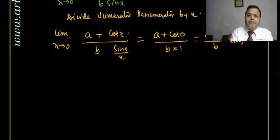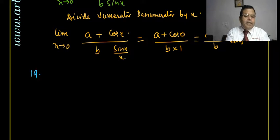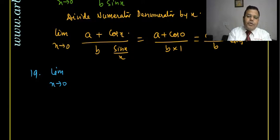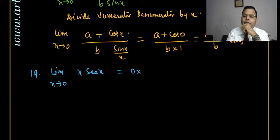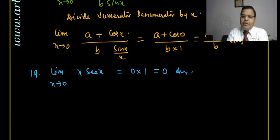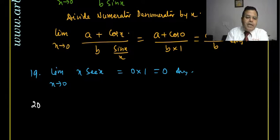Question 19: limit as x tends to 0 of x · sec(x). Substituting x = 0: sec(0) = 1, so 0 × 1 = 0. There is no problem at all. This is not 0 × infinity — x = 0 is a finite value, so we can substitute directly. The answer is 0.